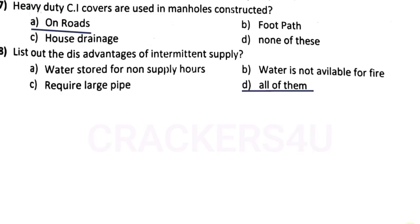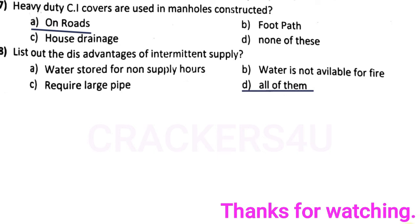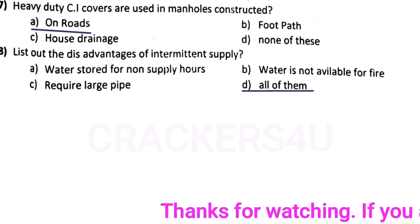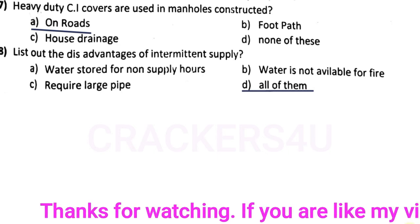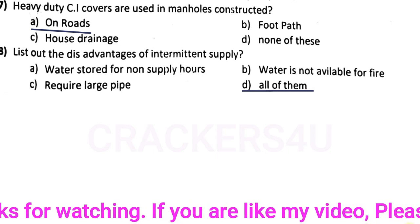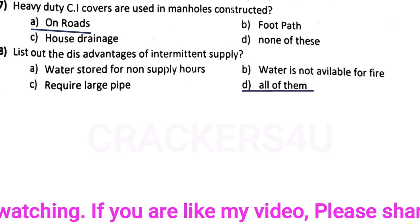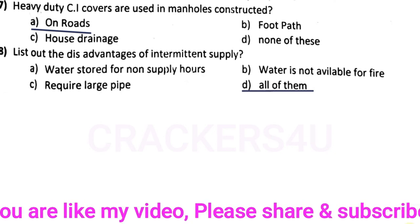Question number forty-four: list out the disadvantages of intermittent supply — answer option D, all of them: water stored for non-supply hours, water is not available for fire, and requires large pipe.